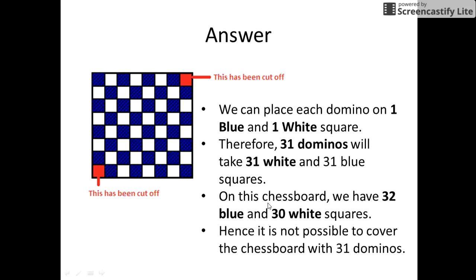So on this chessboard, when the two squares are removed, we have 32 blue and 30 white squares. Hence it is not possible to cover the chessboard with 31 dominoes.